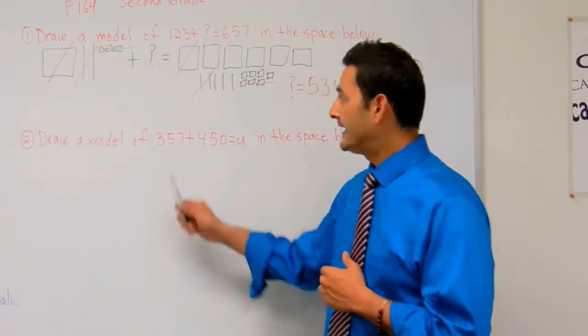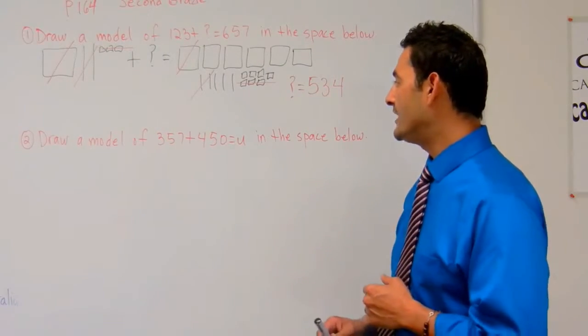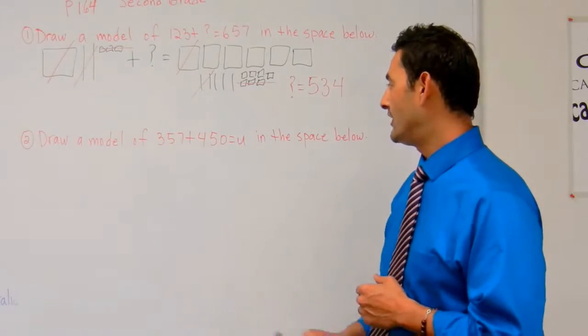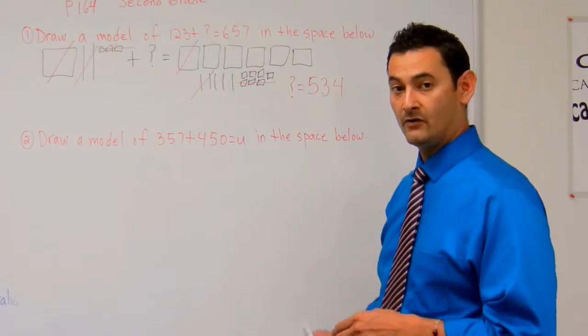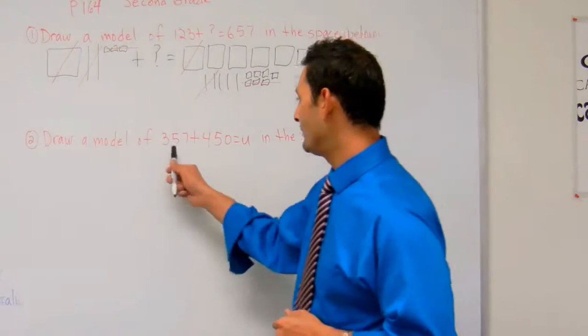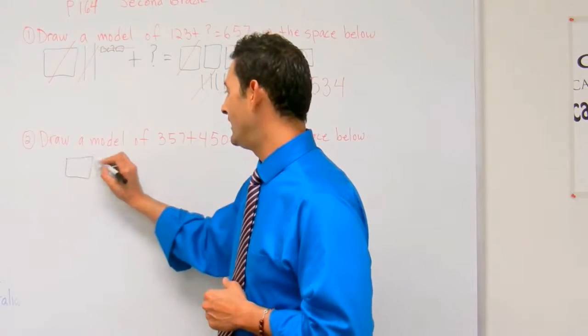Now let's take a look at number two. Here we have draw a model of 357 plus 450 equals U, the unknown number.